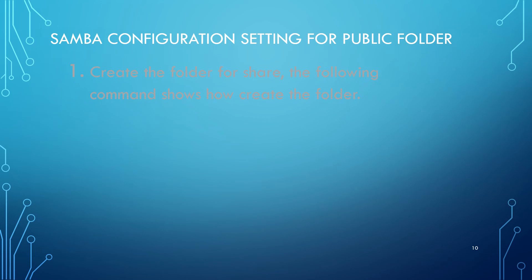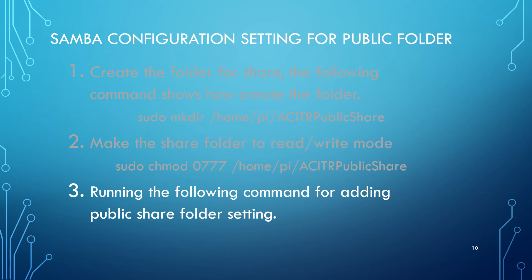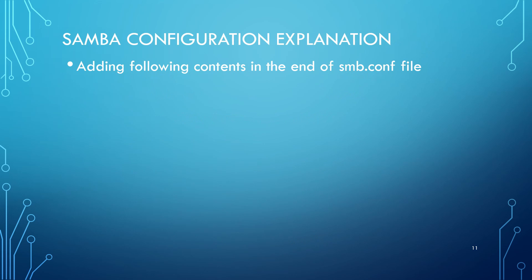After changing the folder access mode, we go to the next step of editing the Samba configuration. Type sudo nano /etc/smb.conf and go to the end of the configuration file. Add the following contents at the end of the file. In this demo, we use the ACIT room public folder for demonstration. You can change it for your own folder.